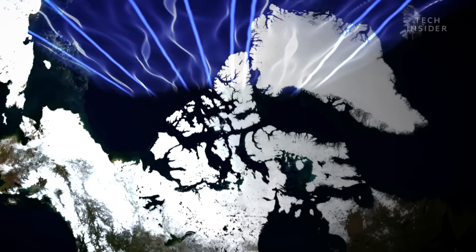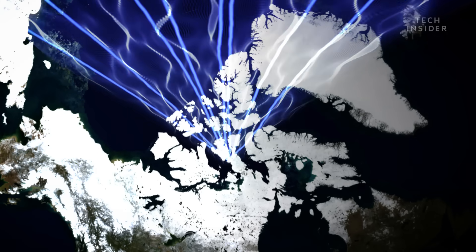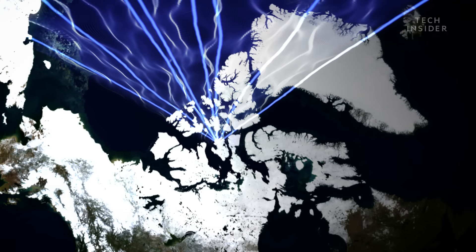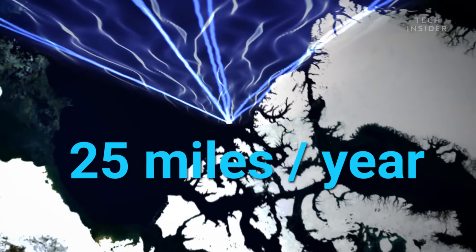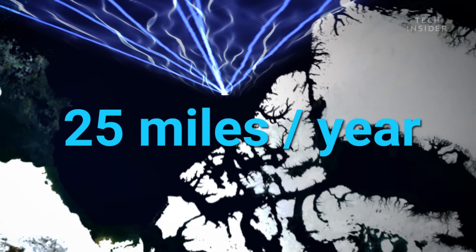Over the last 150 years, the magnetic North Pole has casually wandered 685 miles across northern Canada. But right now, it's racing 25 miles a year to the Northwest.